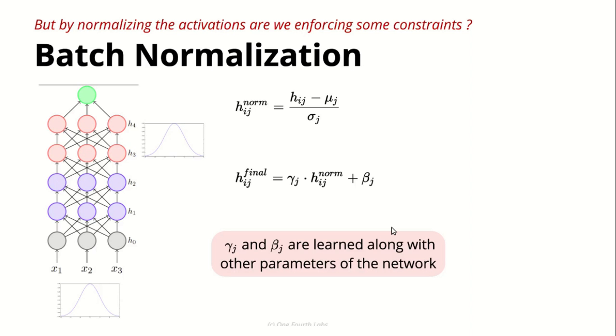In the last video, we saw how we normalize the hidden layers by this formula. The idea was very simple: we calculate the standard deviation and the mean, subtract each value from the mean, and divide by standard deviation. That's how we normalize all layers.